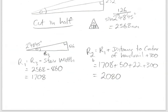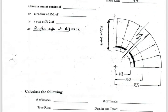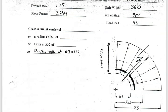R1 comes out to 1708. R2 is a little more involved. The line of travel is taken 300mm from the center of the handrail. We also need to account for the handrail thickness of 44mm — half of that is 22mm, which gets us to the edge of the handrail. Then there's a code requirement of 50mm clearance from the wall to the handrail.